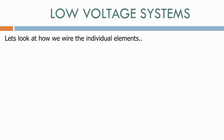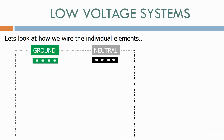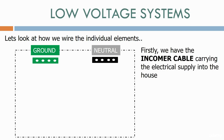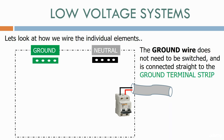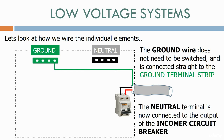Let's look at how we wire the individual elements. Firstly, we have the incomer cable carrying the electrical supply into the house. This connects to the incomer circuit breaker, which switches both the live and neutral wires. The ground wire does not need to be switched and is connected straight to the ground terminal strip. The neutral terminal is then connected to the output of the incomer circuit breaker.